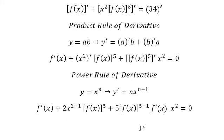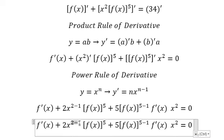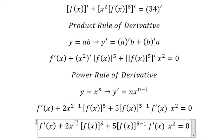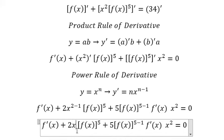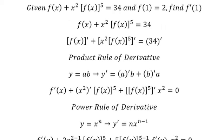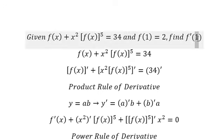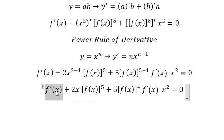Now we simplify: x to the power of one is just x, and the exponent here becomes four. Now we substitute x equals one into both sides to find the first derivative of the function at s equals one.